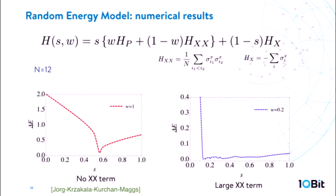We study this system numerically. The Hamiltonian has only diagonal components with a Gaussian distribution, and we add an XX term and an X term. S goes from zero to one during annealing, so initially we have a large transverse field which eventually goes to zero. W is the ratio between the problem Hamiltonian and the XX term. We study the energy spectrum of this system and look at the energy gap between the ground state and the excited state.